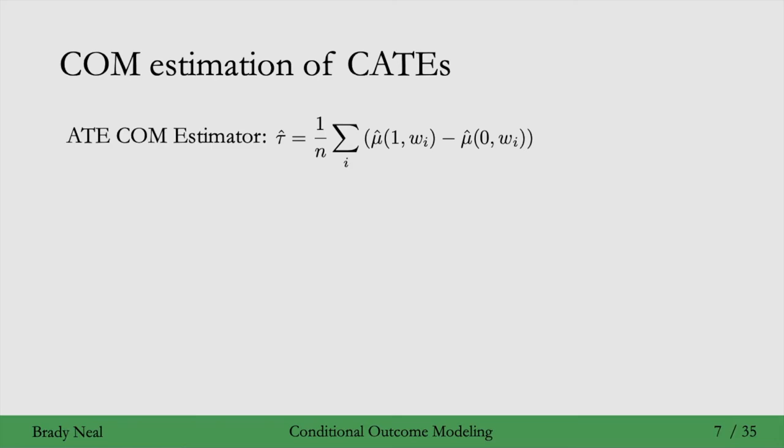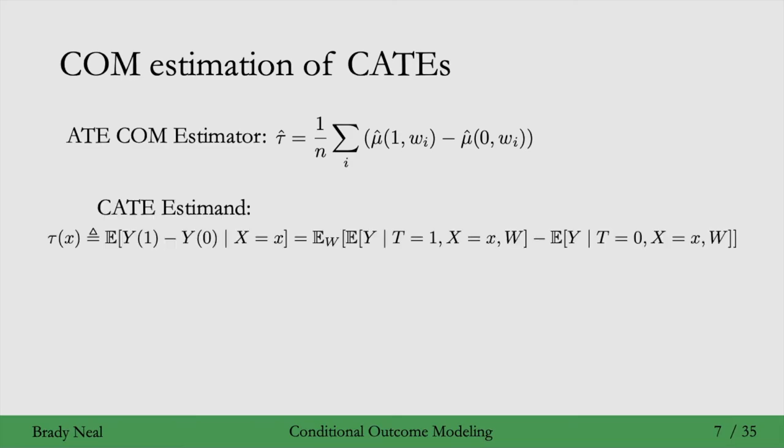How about we extend this to estimation of conditional average treatment effects? Here is the average treatment effect COM estimator that we just saw. And here is the CATE estimate that we saw in the preliminary slide. On the rightmost side, we have the statistical estimate that we'll use to guide how we get an estimator here. Similar to the last slide,